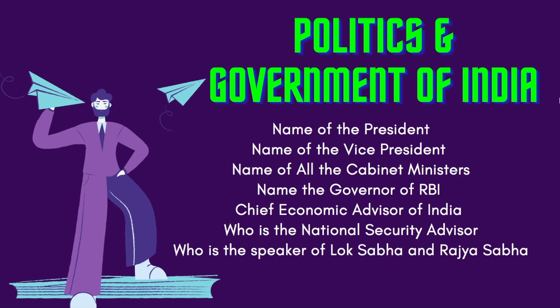Getting to the questions — the first type coming up, from all the people who've given their CUET and interviews, is Politics and Government of India. A lot of questions relate to the name of the President, name of the Vice President, names of all cabinet ministers. You should also know the name of the Governor of RBI, Chief Economic Advisor of India, who is the National Security Advisor, as well as who are the Speakers of Lok Sabha and Rajya Sabha.